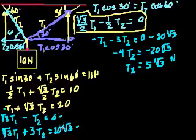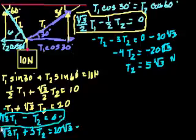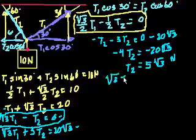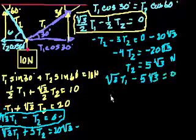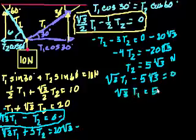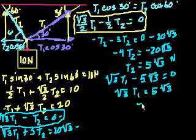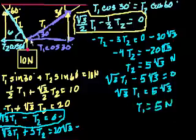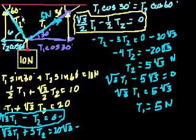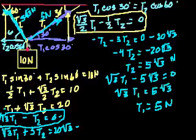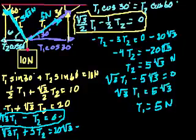Now substituting back to find T1, using √3·T1 minus T2 = 0: with T2 = 5√3, we get √3·T1 = 5√3. Dividing both sides by √3, T1 equals 5 newtons. So the first wire has tension 5 newtons, and the second wire has tension 5√3 newtons. The second wire is doing more of the pulling, which makes sense because it's steeper and contributes more to the y component. Their combined tension exceeds 10 newtons because some force is spent pulling against each other horizontally.